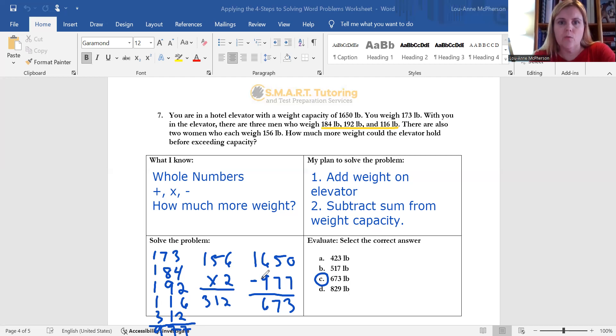It says there are also two women who each weigh 156 pounds. So when you see 'each' in this case, we're going to multiply. Okay. So we're going to multiply the two by 156. And then lastly, it says 'how much more' - this one's tricky because we see 'more' we typically want to add, but in this case we're going to subtract. Okay. So your operations for this question are to add, multiply, and subtract.